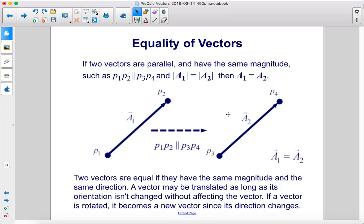A vector may be translated as long as its orientation isn't changed without affecting the vector. If a vector is rotated, it becomes a new vector since its direction changes.